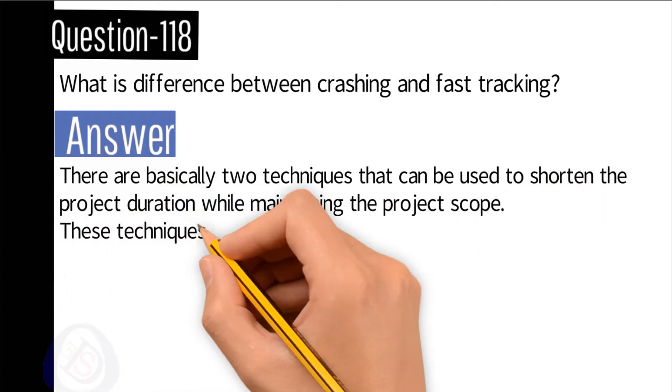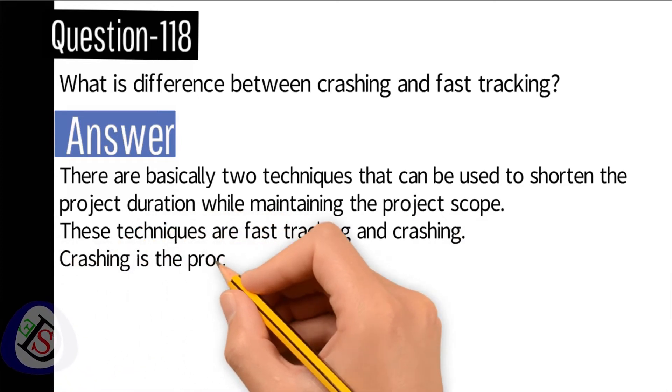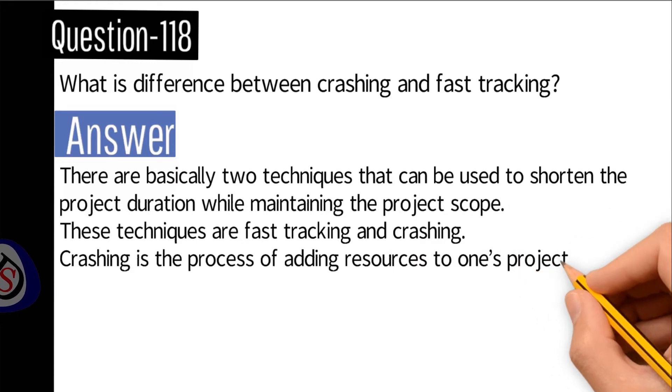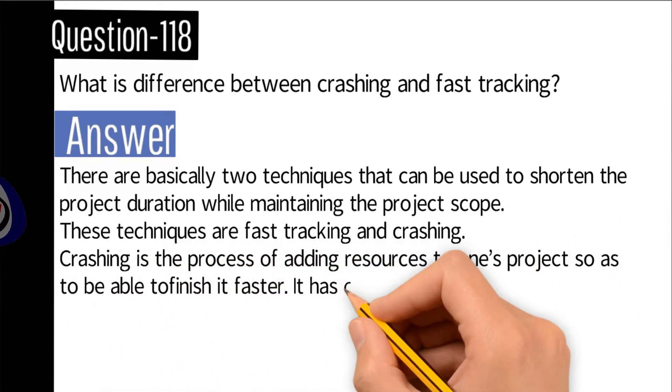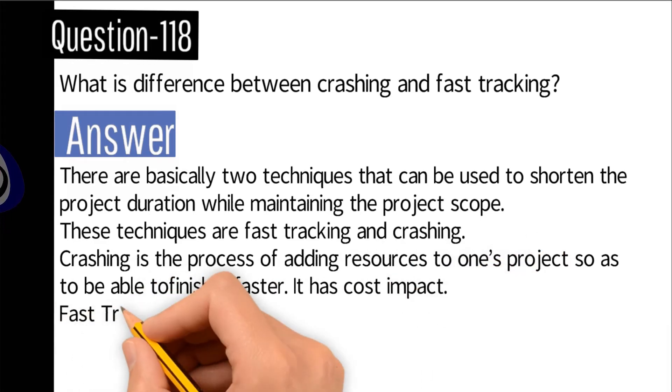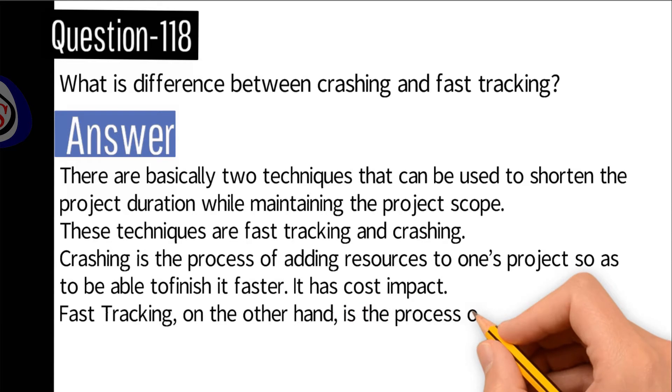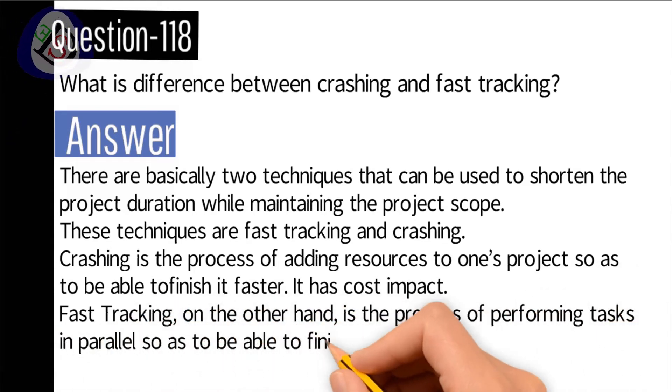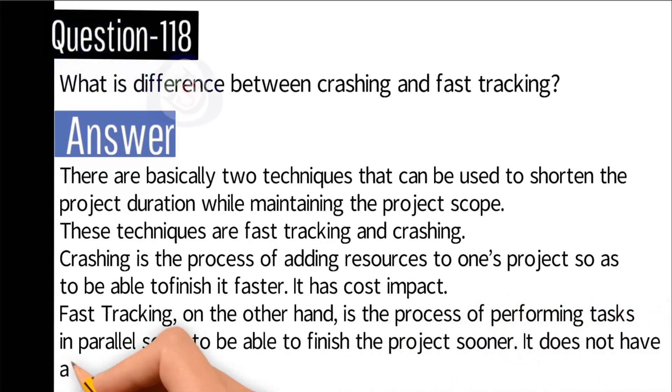Crashing is a process of adding resources to one's project so as to be able to finish it faster. It has cost impact. Fast tracking, on the other hand, is the process of performing tasks in parallel so as to be able to finish the project sooner. It does not have any cost impact but increases the risks.